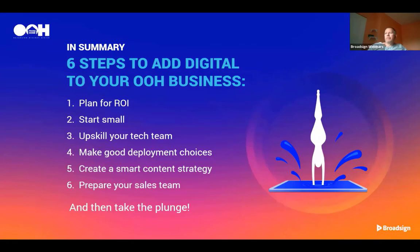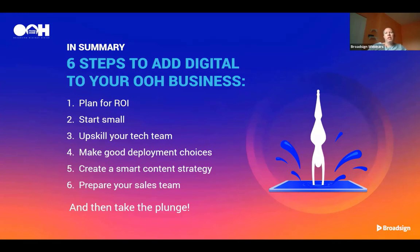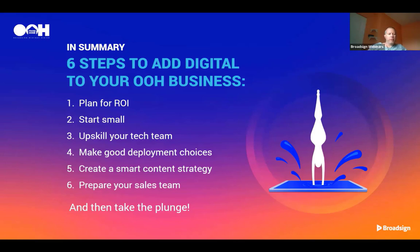In summary, there are six steps to adding digital to your business: planning for ROI; start small and run a pilot so you can find issues early on; upskill your tech team so you have the right people; make good deployment choices and verify these with a small pilot deployment; make sure you have a content strategy and be ready to adapt it as you go; and get your sales team ready — make them aware of what they're going to be selling and how they're going to be selling it. The more standardized and uniform you can keep things, the easier everything is to manage.